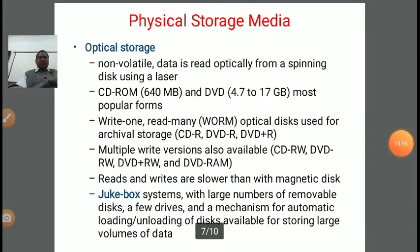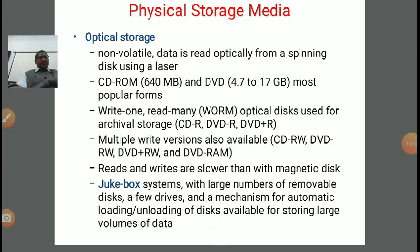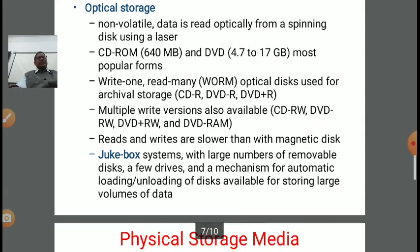Next is optical storage. It is non-volatile. Data is read optically from a spinning disk using a laser. CD-ROM — Compact Disk Read-Only Memory — has a capacity of 640 MB. DVD — Digital Video Disk — ranges from 4.7 to 17 GB and is the most popular. It is a write-once, read-many form. These types of optical disks are used for archival storage. Multiple write versions are also available — like CD-RW, DVD-RW, and DVD+RW — meaning modifications can also be done. Read and write speeds are slower than magnetic disk. Jukebox systems with large numbers of removable disks and a mechanism for automatic loading and unloading are used for storing large volumes of data.